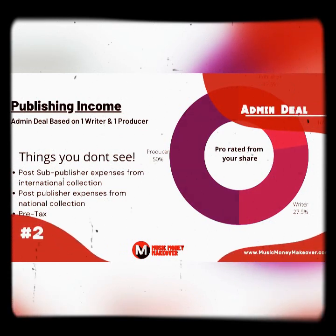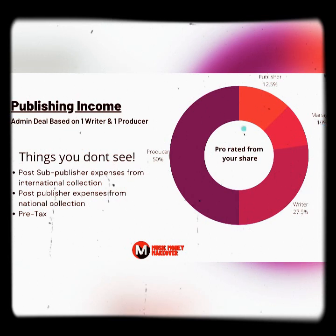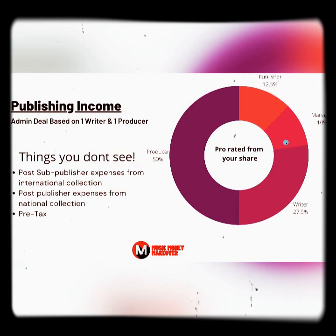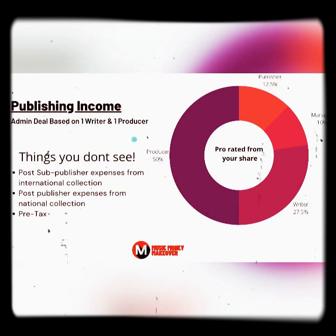Now, if you did an admin deal, you can start to see how this is eating in. Admin deals are going to be roughly 20 to 25%; I put this in at 25% — 12.5 times 2 is 25%, and the manager at 10 times 2 is 20%, so again we're prorating. The manager is eating into it right here, but we can't be mad because the manager is handling stuff for us. This is what you're getting left with after paying your manager 20% and the publisher.